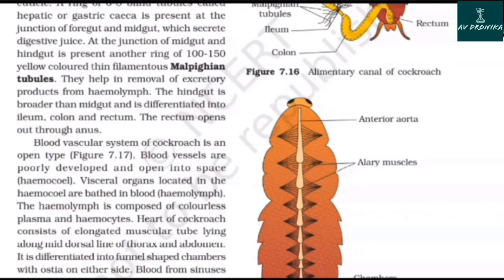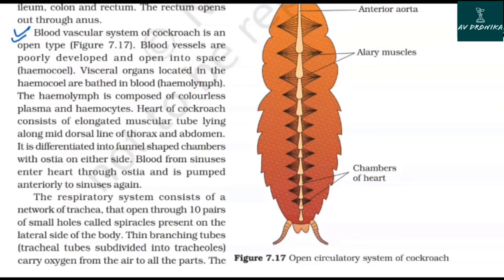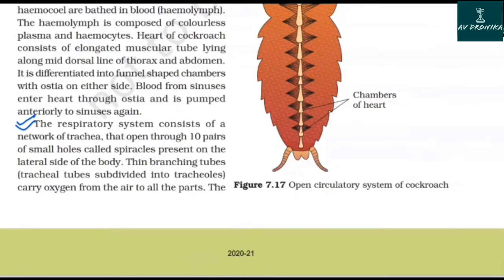The blood vascular system of the cockroach is of the open type. Blood vessels are poorly developed and open into spaces called hemocoel; visceral organs located in the hemocoel are bathed in blood, the hemolymph. The hemolymph is composed of colorless plasma and hemocytes. The heart of the cockroach consists of an elongated muscular tube lying along the mid-dorsal line of the thorax and abdomen, differentiated into funnel-shaped chambers with ostia on either side. The respiratory system consists of a network of trachea that opens through 10 pairs of small holes called spiracles on the lateral side of the body. Thin branching tracheal tubes carry oxygen from the air to all parts.